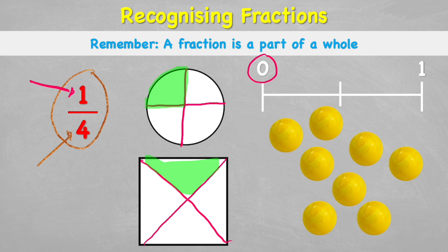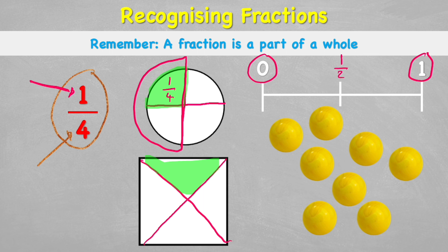On the number line, zero is here and one is here, so one half is in the middle. One quarter is like saying half of a half — this whole side is my half, and one quarter is half of that again — so one quarter sits halfway between zero and one half.